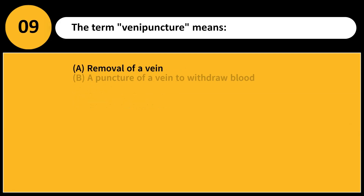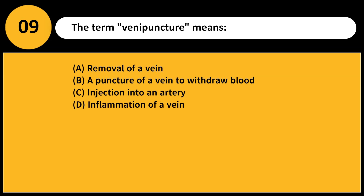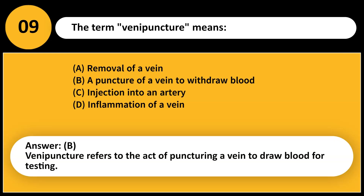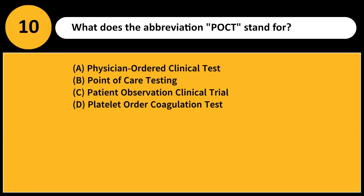The term venipuncture means: A. Removal of a vein B. A puncture of a vein to withdraw blood C. Injection into an artery D. Inflammation of a vein. Answer: B. Venipuncture refers to the act of puncturing a vein to draw blood for testing.